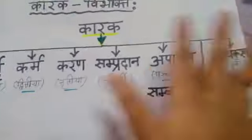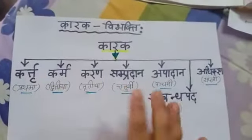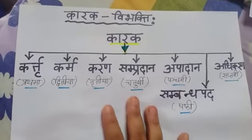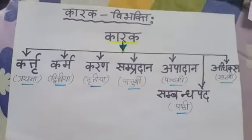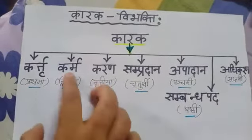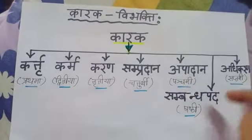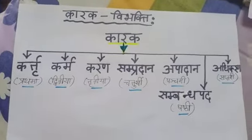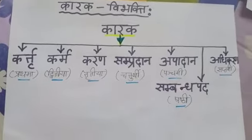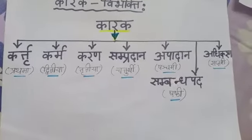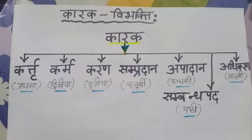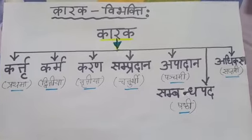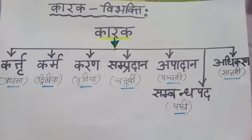If you memorize this structure, you will never forget which karak takes which vibhakti. Total: prathama to saptami vibhakti — you have to know which karak takes which vibhakti. Definitely more rules are there, but only this much is enough for you because this is a language and you are just now learning about karak.